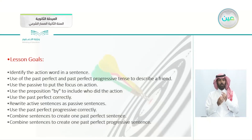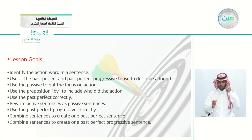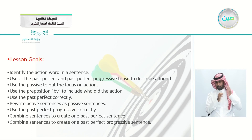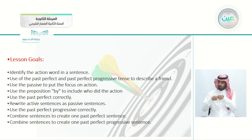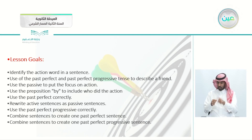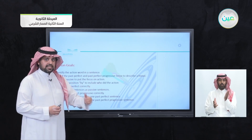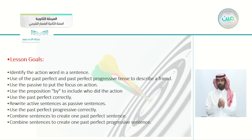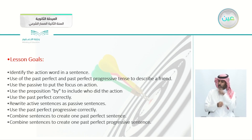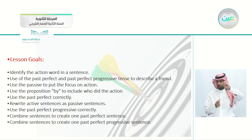We will be taking the grammar from Unit 2, and these are today's goals: to identify the action of the word in a sentence, the use of the past perfect and the past perfect progressive tense to describe a friend, the use of the passive to put the focus on the action — remember this goal — the use of the preposition 'by' to include who did the action, or the doer of the action.